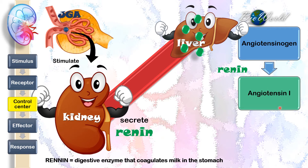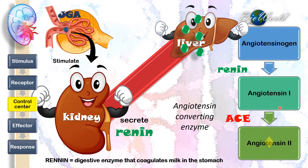Since the liver carries out multiple metabolic processes, the liver will use this renin to convert a protein known as angiotensinogen into angiotensin 1. Then angiotensin 1 is converted into angiotensin 2 by an enzyme present in the liver called ACE — angiotensin converting enzyme.